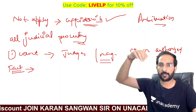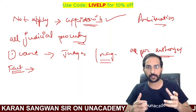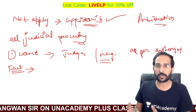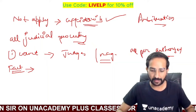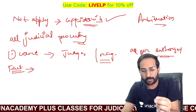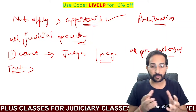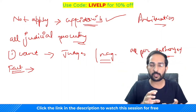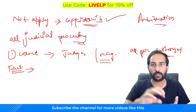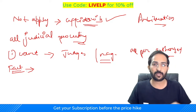Coming to relevant facts: when one fact is relevant to another, you can allow evidence of it under Section 5. Section 5 provides that evidence may be given of relevant facts or facts in issue. Other facts that are not relevant are not admissible as evidence.